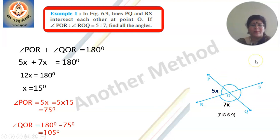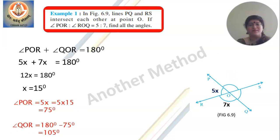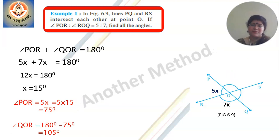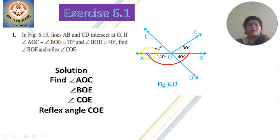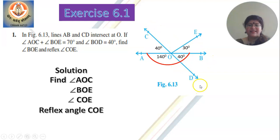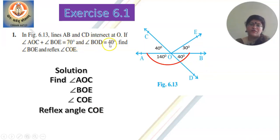Now we begin with the first question of exercise 6.1. There are two lines AB and CD intersecting each other at point O. They have mentioned that the sum of two angles is 70 degrees and angle BOD is 40 degrees. You have to find out angle BOE and angle COE.